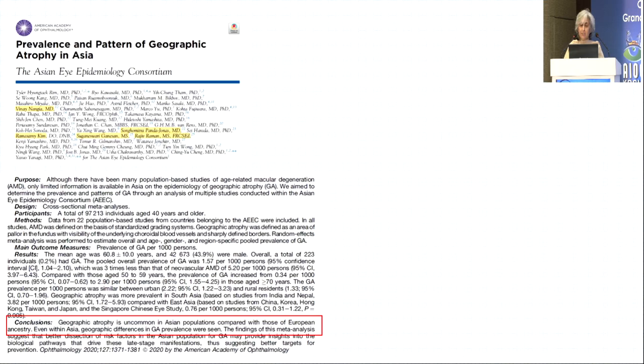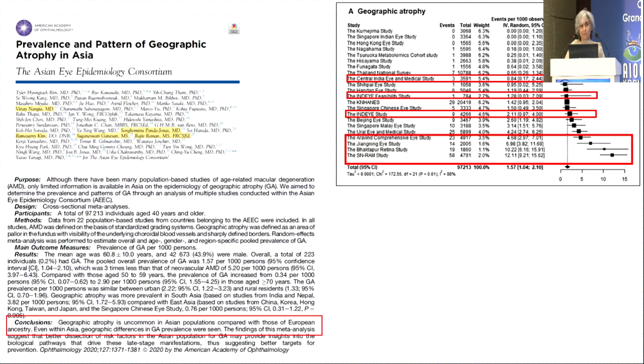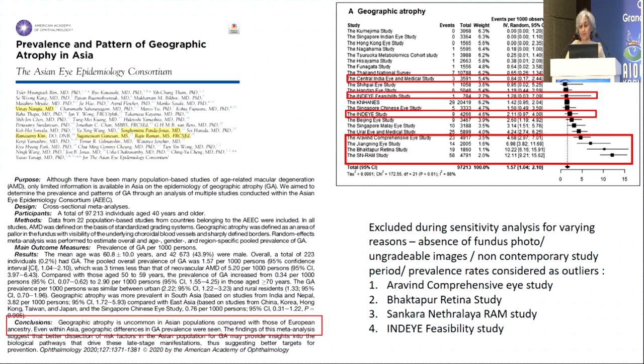There has been a recent publication on prevalence and pattern of geographic atrophy in Asia. We thought we knew that geographic atrophy is not so common in Asia as it is in the West. We were proud to see many studies from India including our own, but the Indian data was not included in the finer analysis due to various reasons — access, time of evaluation, and some cases being considered outliers — so this may not reflect the real picture of geographic atrophy.